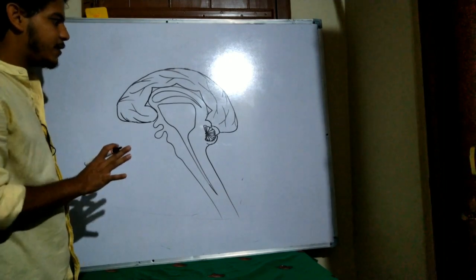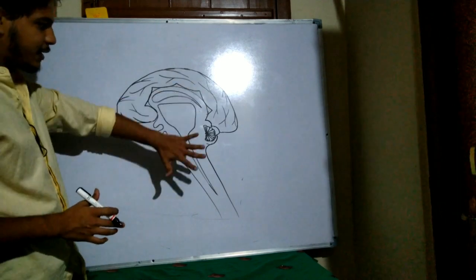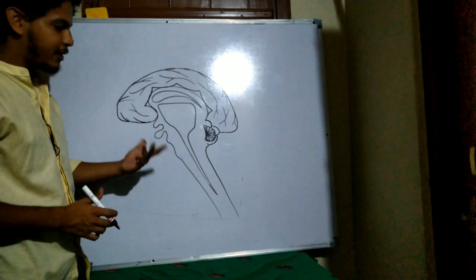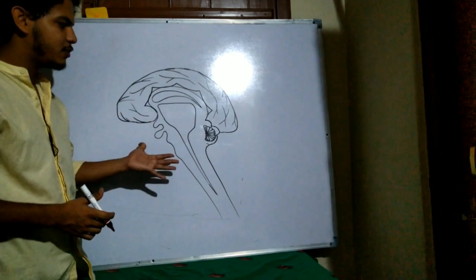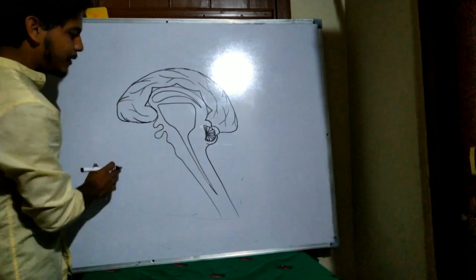This much is enough because in your book the diagram is very difficult. So this is the easiest way we can draw a brain and it takes only two to three minutes. If we practice it again and again, it will take only two to three minutes. So now we will name the parts.